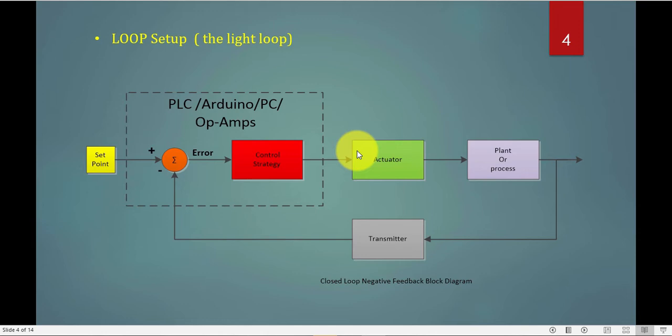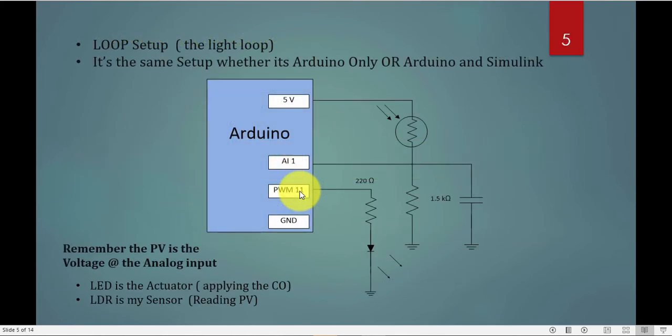This concept is actually not new for us. We are using it every day. Each time you want to reach for something, a pen, a cup to drink, or anything, this is what happens. Your brain, which is the controller, will read your current location through your eyes, which are the sensor, and send the actuation, sending the command or the control output to your arms or your legs to move toward the location you want. It's a continuous process, so basically the human being is the best example of a control loop.